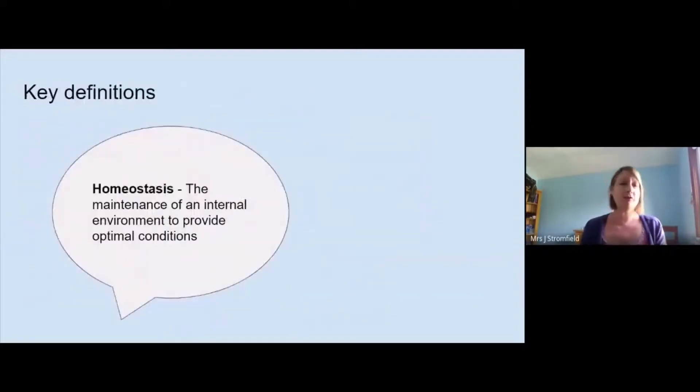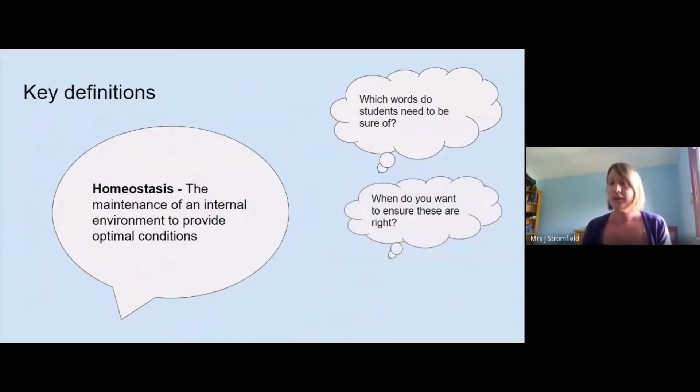Moving onwards, key definitions. I can rattle off, homeostasis is the maintenance of an internal environment to provide optimal conditions, off the top of my head. That's a two mark answer, it's come up already and it's likely to come up again. What I can't do is the same for the keywords and terms in physics. So first up, I need to know what keywords the students need to be sure of, which ones come up that they need to know specific definitions for, either to work out questions with it or actually write down the definitions. When do you want to ensure that these are correct? When do we want to teach them?